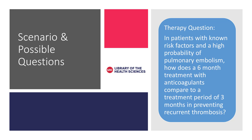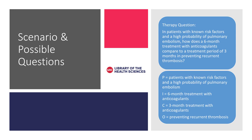A possible therapy question could be: in patients with known risk factors and a high probability of pulmonary embolism, how does a six-month treatment with anticoagulants compare to a treatment period of three months in preventing recurrent thrombosis? In this example, our patient has known risk factors and a high probability of pulmonary embolism. We are comparing the six-month anticoagulant treatment to a shorter treatment period of just three months. And the outcome we are looking at is preventing recurrent thrombosis.